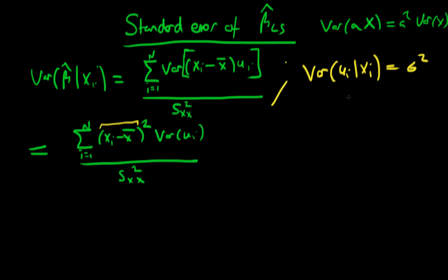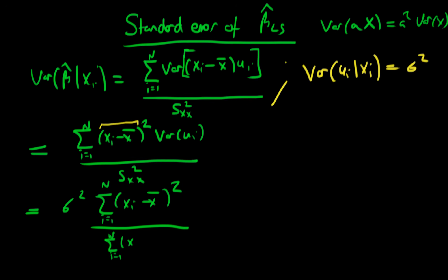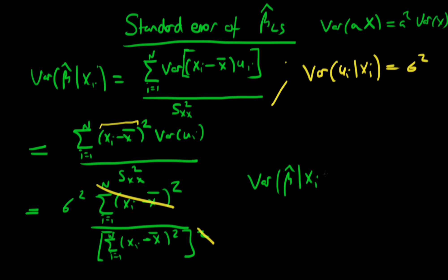We know that the variance of u_i is completely independent of x_i — it's just equal to sigma squared. So we can write this whole thing as sigma squared times the sum from i equals 1 to n of (x_i minus x-bar) all squared, divided by S_xx all squared — which, written explicitly, is the sum of (x_i minus x-bar) all squared, and then that whole thing squared. You can see from the top and the bottom that we're going to have some cancellation. This cancels with one of the S_xx terms on the bottom, and we're left with the general form: the variance of beta hat given x_i is sigma squared divided by the sum from i equals 1 to n of (x_i minus x-bar) all squared.